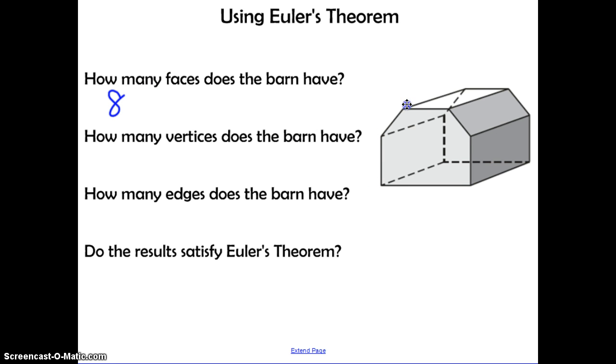Then we want to count the vertices, 1, 2, 3, 4, 5, 6 on the front, 1, 2, 3, 4, 5, 6 on the back. So we have a total of 12 vertices.